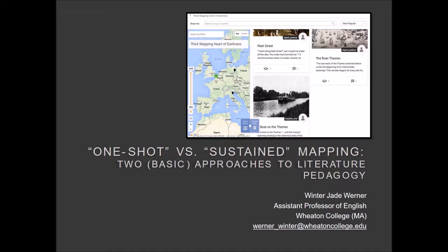In a very short space of time last year, I found myself in the midst of two literary mapping projects. One was a one-and-a-half month summer independent study with a student, followed in fall 2015 with an intro course to digital humanities and Victorian literature, in which I perhaps rashly decided to spend only two class periods on mapping tools — hence the 'one-shot mapping,' because we had only one shot to get it right.